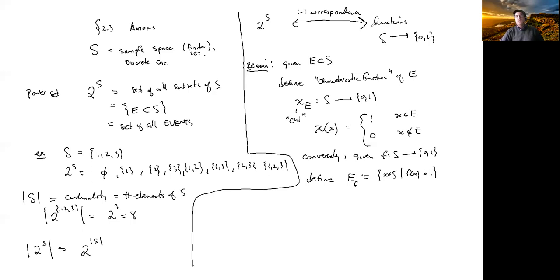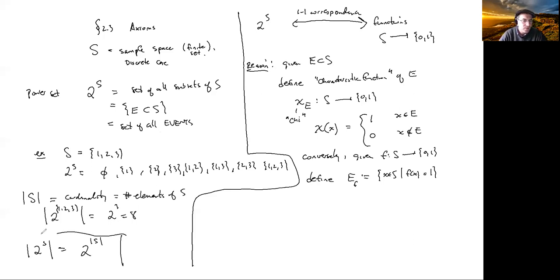So how many functions are there from S to {0,1}? I claim there are 2 to the power of the cardinality of S, because to specify a function we have to say what it does on every element in S. For every element of S, there are two choices. So it's 2×2×2×2, one for each element of S. And that's why this claim works — that's the reason.